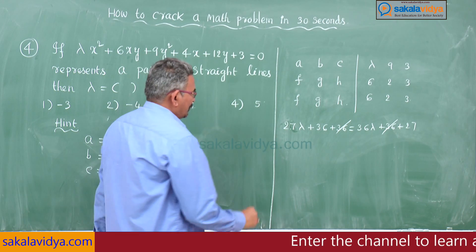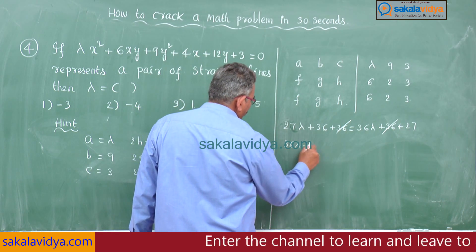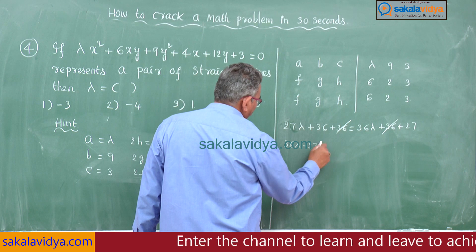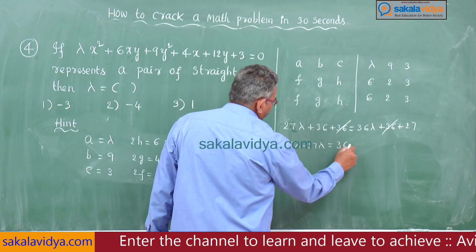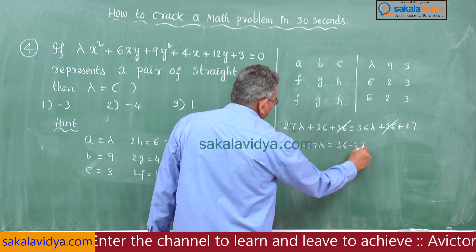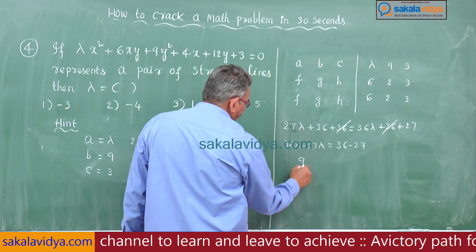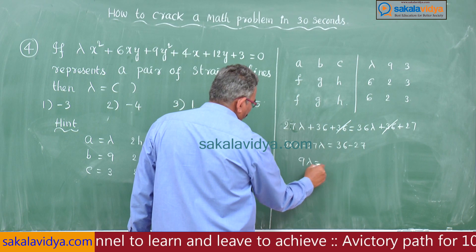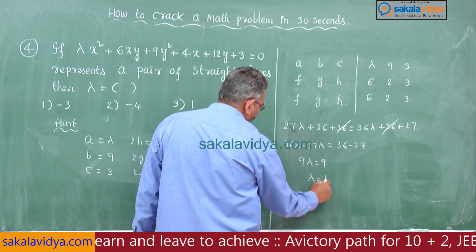So we get: 27λ + 36 + 36 + 27. The 36s cancel, leaving 36λ - 27λ = 36 - 27, which gives 9λ = 9, so λ = 1.